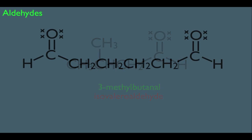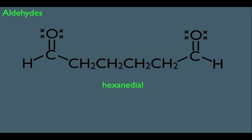What if you have two aldehydes on the same molecule? The name would be hexanedial — hexane because it's six carbons long, and di-al because there are two aldehyde groups. You wouldn't need to number where those aldehydes are, because aldehydes always have to be at the end of a molecule, so numbering would be unnecessary.